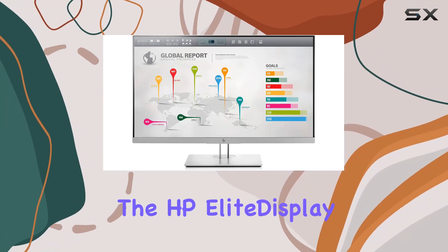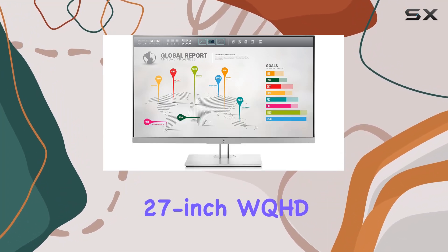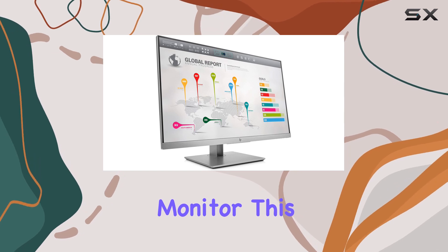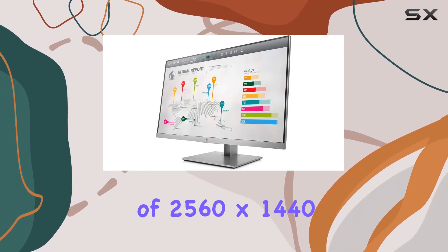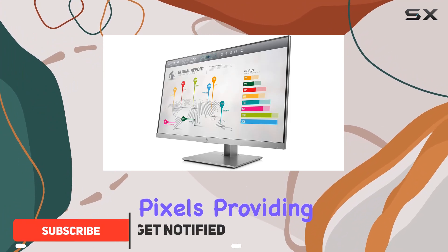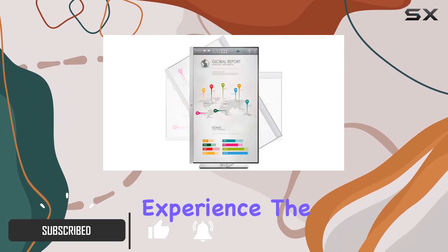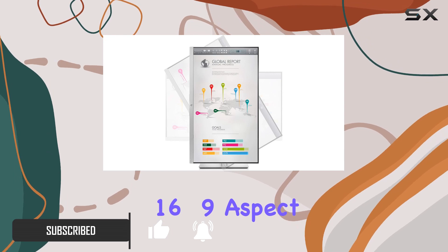Today we're diving into the HP Elite Display 27-inch WQHD monitor. This sleek renewed display boasts a stunning resolution of 2560 by 1440 pixels, providing a crisp and vibrant viewing experience. The 16:9 aspect ratio and LED backlight technology enhance the visual clarity, making it an excellent choice for work or entertainment.